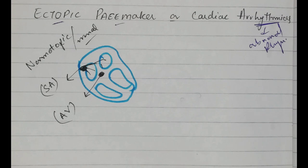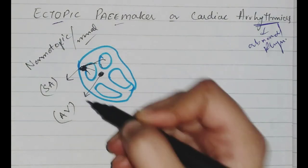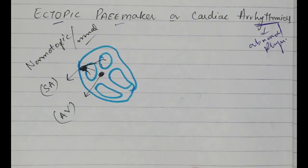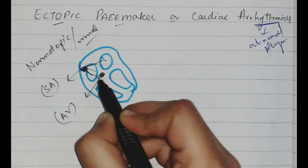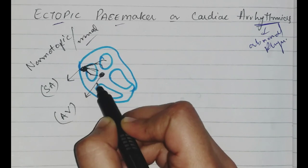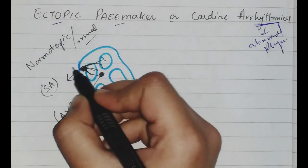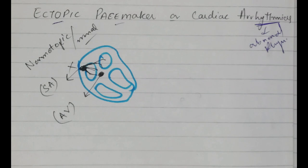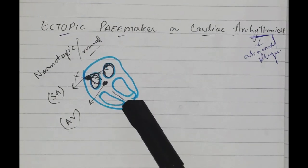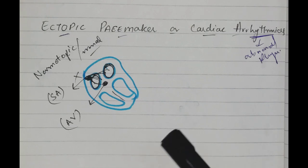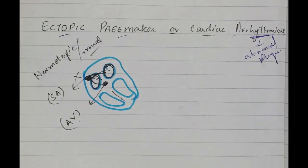The impulses need to be generated so that they can generate impulses here. This might become temporary as a node. If the SA node does not generate impulses, other nodes will take over.